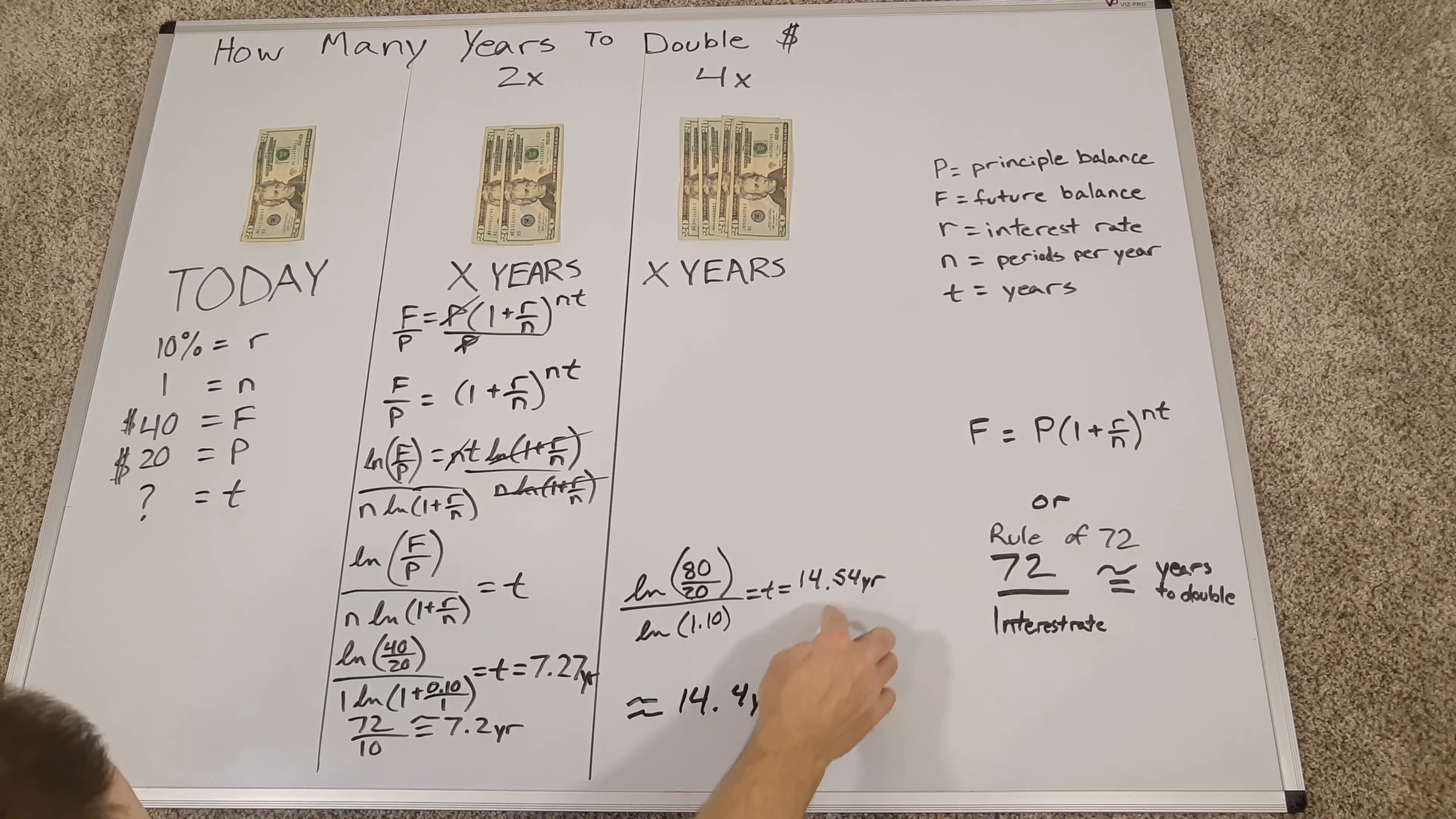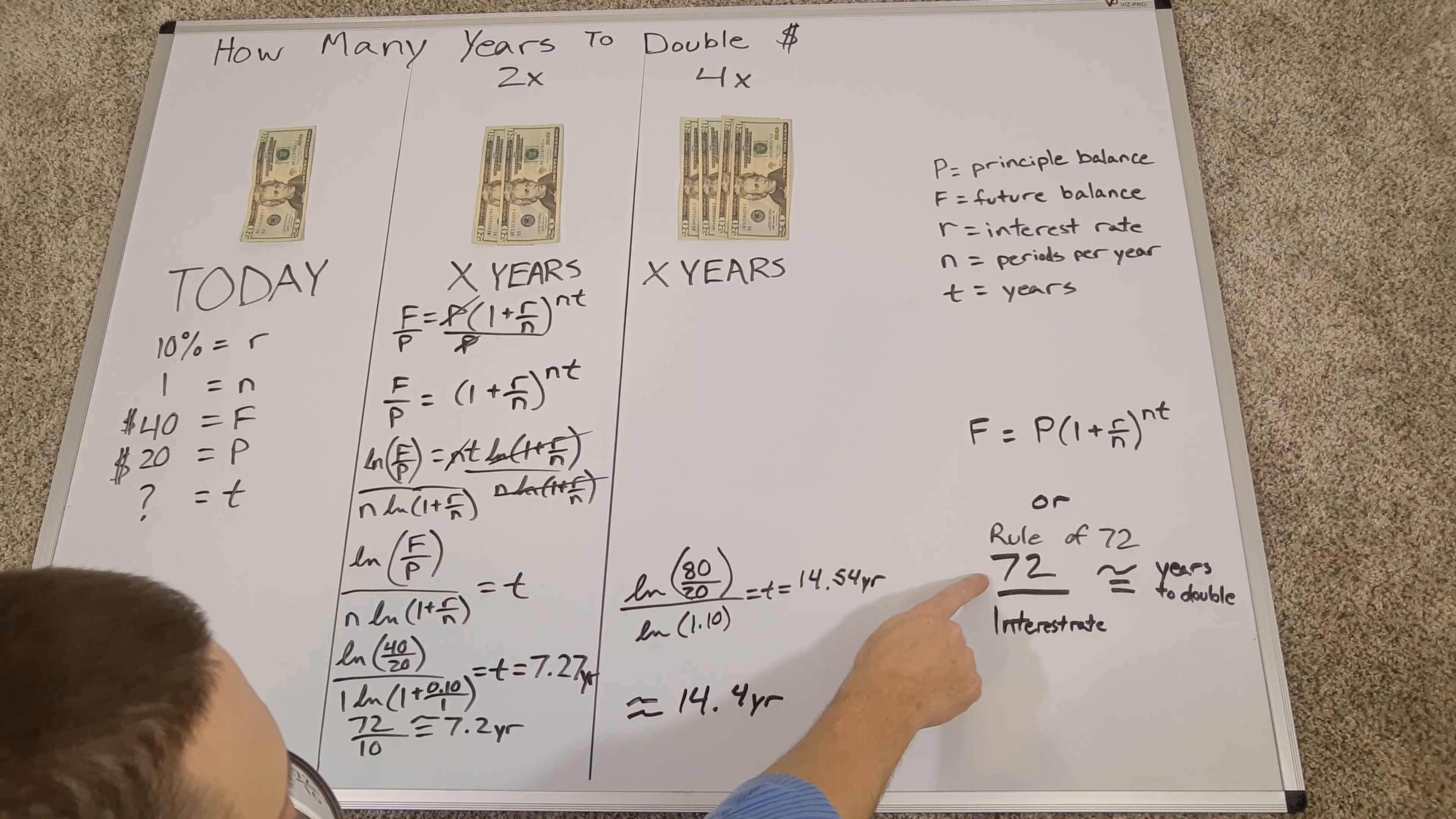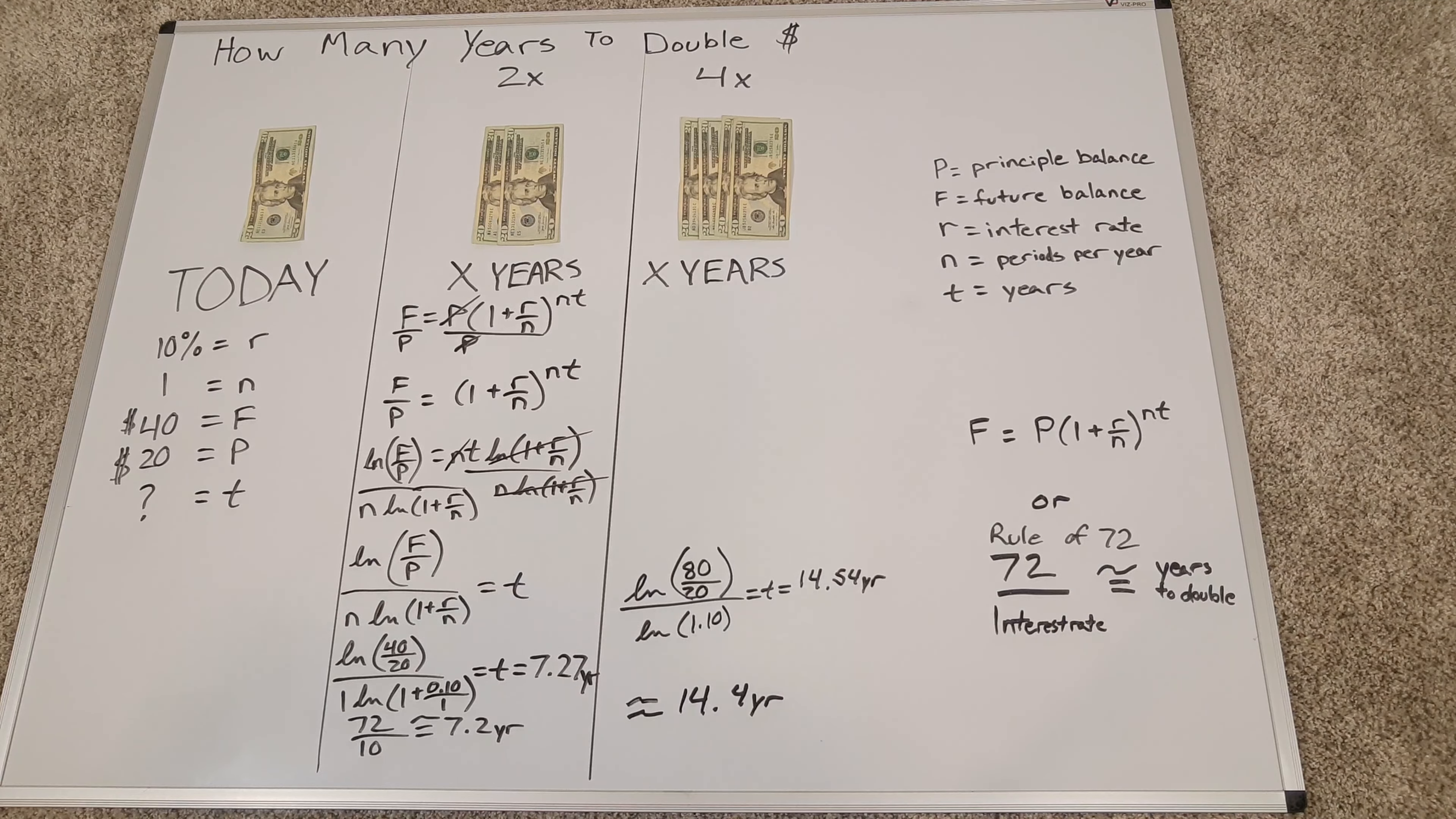So the rule of 72 gets us very close to the actual number. You're only off by 0.14 here. You're off by 0.07 here. So the rule of 72 is take 72 divided by your interest rate, gives you the number of years to double.